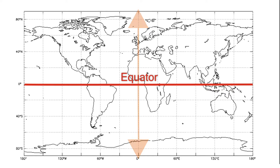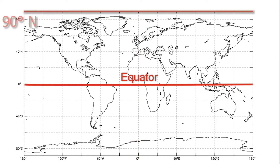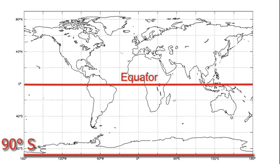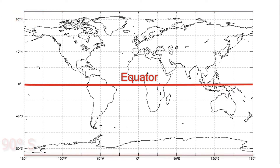The north pole is designated as 90 degrees north, and the south pole is designated as 90 degrees south. Therefore, every position on Earth can be defined by how many degrees north or south they are from the equator.